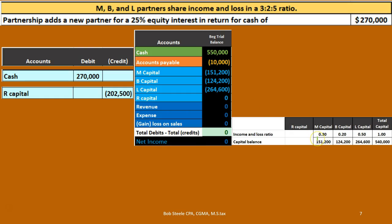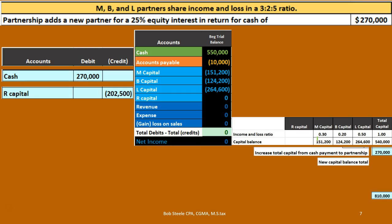Then the new partner comes on the books and gives the partnership $270,000. Therefore cash goes up, the assets go up by $270,000, and assets minus liabilities equals $810,000. That means our new total capital accounts after the transaction needs to be at $810,000.